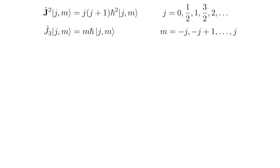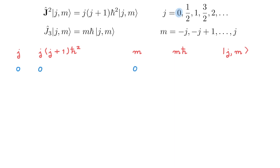We're now ready to look at a few examples of angular momentum eigenvalues and eigenstates. Let's place the relevant quantities at the top: j, then the j squared eigenvalue, then m, then the j3 eigenvalue, and then the corresponding eigenstate. The first possible j value is j = 0. The eigenvalue is trivially 0, m is also 0, and so is the j3 eigenvalue. There is a single eigenstate, which we label |0,0⟩.